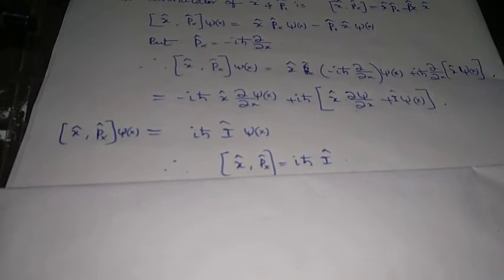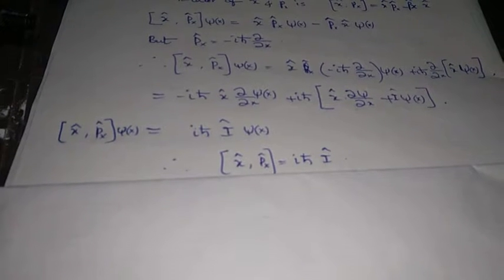If we remove ψ(x) from both sides, we can write the commutator of x and p_x equals iℏ times the identity operator.